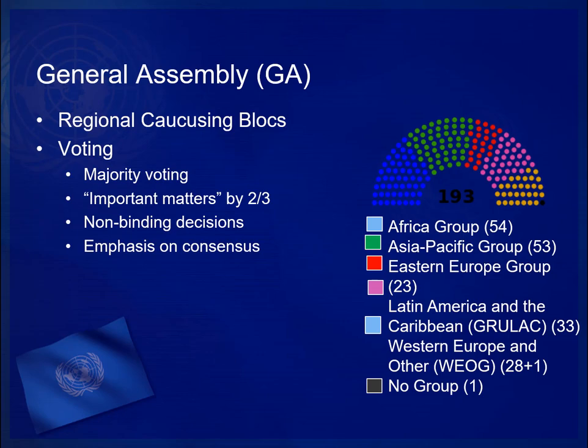The United States has opted not to join any group but caucuses with the Western European and others group. Israel would geographically belong to the Asia-Pacific group, but its membership has been blocked by several Arab states. For years it informally participated with the Western European and others group, and in 2013 was granted permanent status there. Turkey participates in both the Western European and others and the Asia-Pacific groups, but for representation and voting purposes is a member of Western European and others only. Kiribati does not participate in any group.